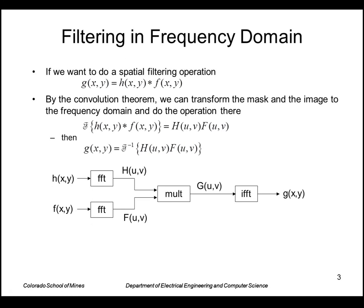Pictorially, we take our filter and take the fast Fourier transform of that to get capital H, do the same thing for the image, multiply those two point-by-point to get capital G, and then take the inverse fast Fourier transform to get the result in the spatial domain.